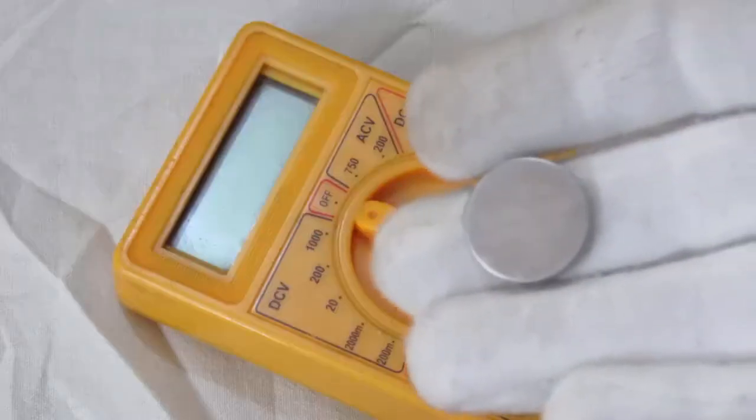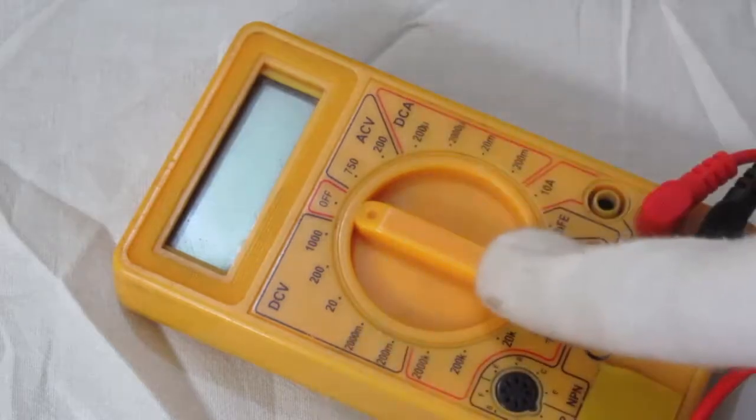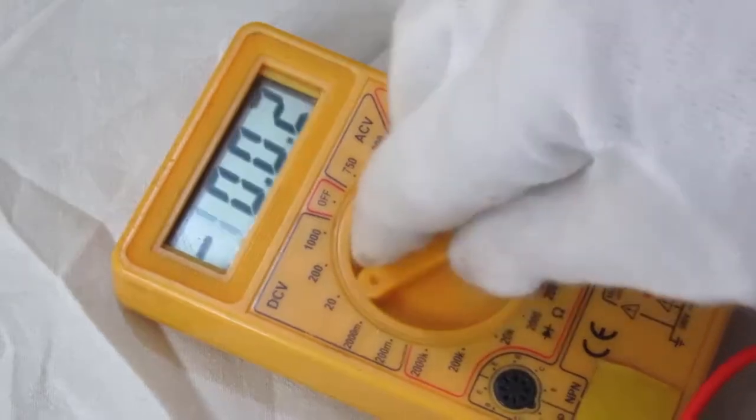And now let's check this CMOS battery with the help of a digital multimeter. So this is the digital multimeter.